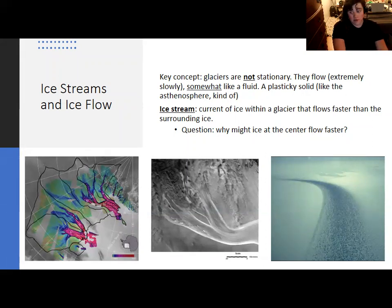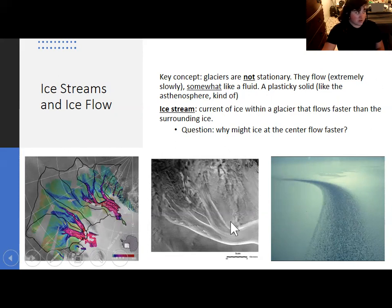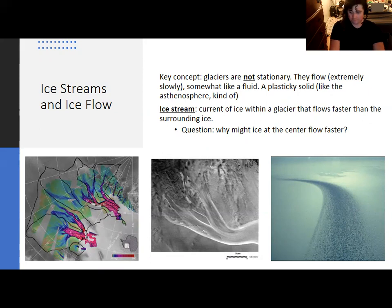Within ice sheets, you can actually spot noticeable currents the same way you have currents in an ocean. There are parts of the glacier that are going to move fastest — these are known as ice streams. Often the ice streams are located in the middle of a glacier, where the glacier is moving fastest. Consider friction: a glacier has a lot of friction where it's coming into contact with rock, grinding and crushing that rock.